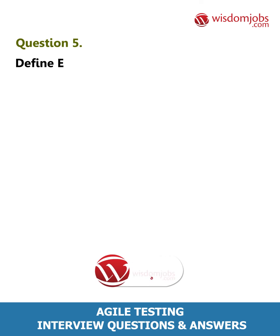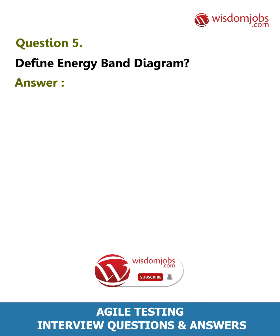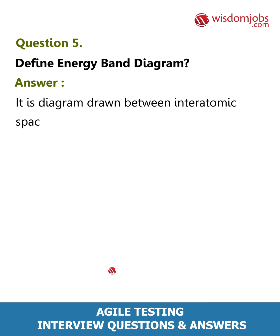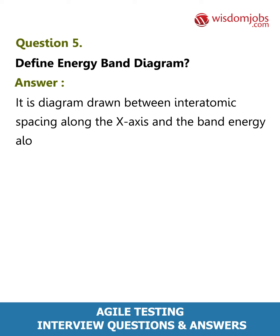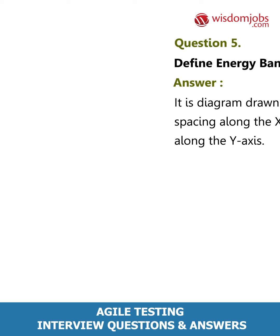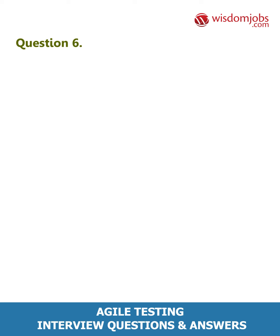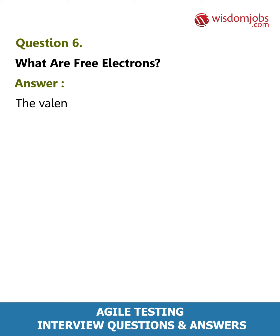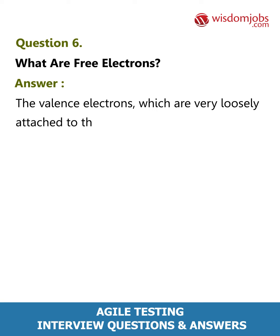Question 5: Define energy band diagram. Answer: It is a diagram drawn between interatomic spacing along the x-axis and the band energy along the y-axis. Question 6: What are free electrons? Answer: The valence electrons which are very loosely attached to the nucleus are known as free electrons.